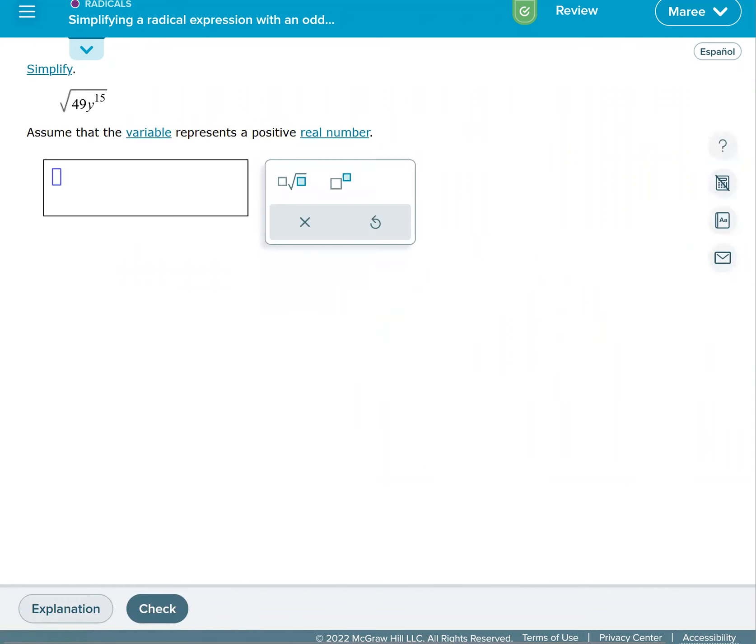We know that the square root of 49 is seven. So I'm just going to stick seven right there. Rewrite y to the 15th as y to the 14th times y. Half of 14 is seven.